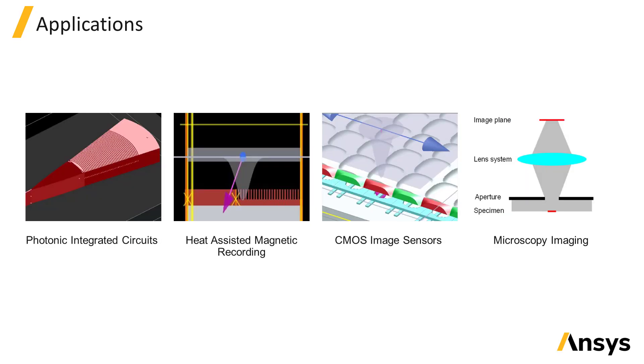Some applications which make use of the Gaussian source are photonic integrated circuits, heat-assisted magnetic recording, CMOS image sensors, and microscopy imaging. The Gaussian source can be used to represent an incident laser source or can be used to represent light from an objective lens with a given numerical aperture.